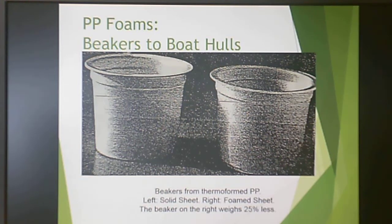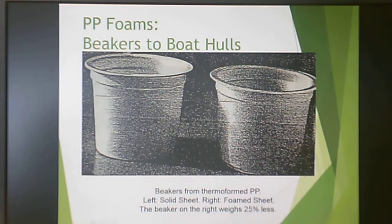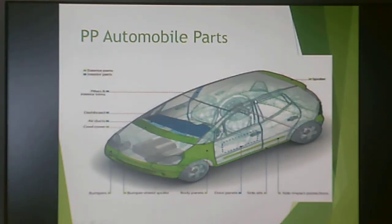You can also make polypropylene foam. The solid sheet material is thermoformed, while the foam version is a foam sheet. The nice thing about foam is it weighs 25% less and costs a lot less to ship — you'd use less diesel fuel to haul it, and they'd all fit in the same space but with less weight.